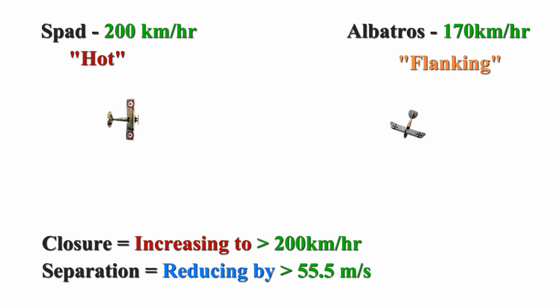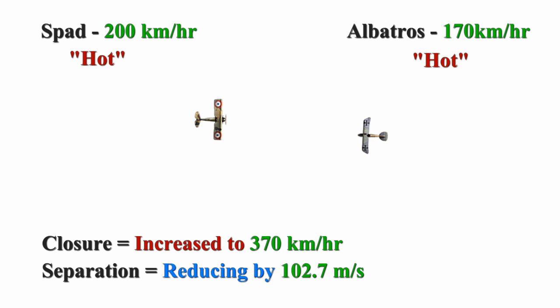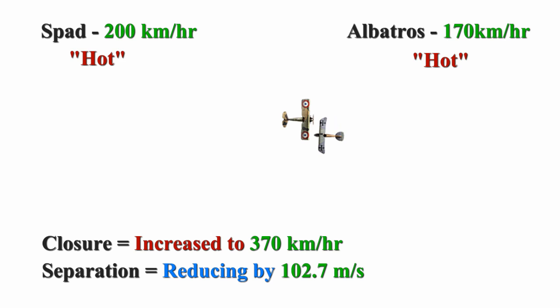The Albatross turns and changes aspect again, closer to a hot-on-hot aspect, thereby increasing the closure. The faster the rate of closure, the faster the separation between the two aircraft will decrease. Right now they are both hot on each other, resulting in a closure rate of 370 kmph and a rapidly decreasing separation.